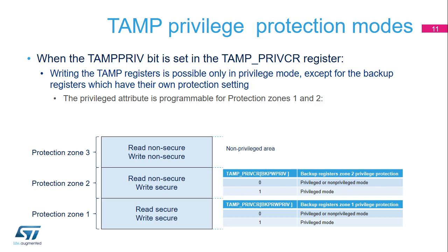By default, after a backup domain power-on reset, all TAMP registers can be read or written in both privileged and non-privileged modes, except for the TAMP privilege mode control register named TAMP-Priv-CR, which can be written in privilege mode only. The TAMP protection configuration is not affected by a system reset. When the TAMP-Priv bit is set in the TAMP-Priv-CR register, writing the TAMP registers is possible only in privilege mode, except for the backup registers which have their own protection setting. The BK-PW-Priv bit in TAMP-Priv-CR register sets the privilege attribute of protection zone 1.